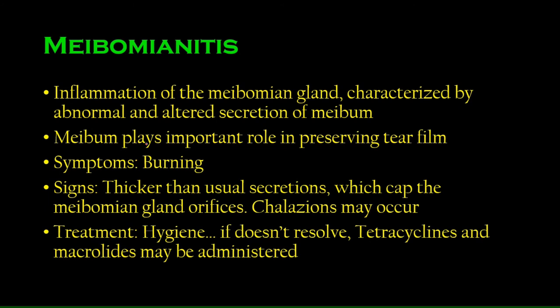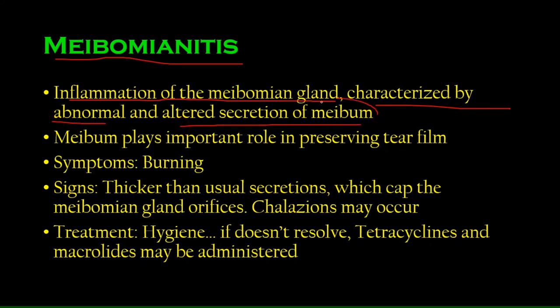Now let's move to posterior blepharitis. The only important gland on the posterior side of the eyelid is the meibomian gland, so posterior blepharitis essentially refers to meibomianitis — inflammation of the meibomian glands. It is characterized by abnormal, altered secretion of meibum, the substance secreted by the meibomian gland, which is a thick, lipid-rich fluid.